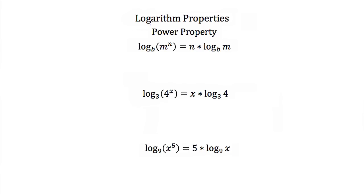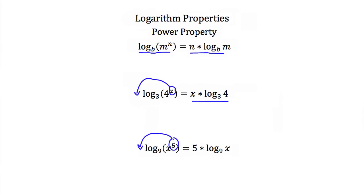The last logarithm property is the power property. This occurs when we're taking the log of a number with an exponent. If you have an exponent on the number you're taking the log of, you can pull that exponent out front and multiply: the log of m to the n power equals n times the log of m. For example, the log base 3 of 4 to the x equals x times the log base 3 of 4. Similarly, the log base 9 of x to the 5th power equals 5 times the log base 9 of x.